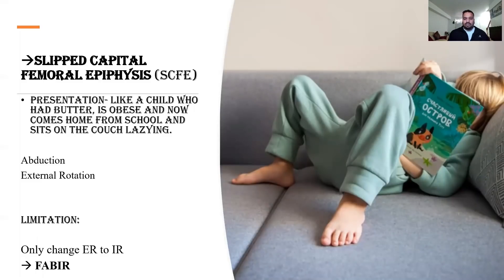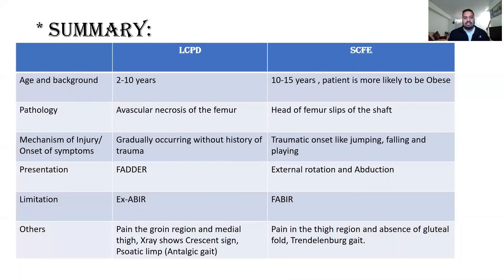To summarize: with LCPD, the age group is about 2 to 10 years, whereas with SCFE it's about 10 to 15 years and the patient is more likely to be obese. The pathology in LCPD is avascular necrosis of the femoral head — the blood supply is compromised, causing necrosis — whereas with SCFE, the head of the femur slips off the shaft at the epiphyseal plate.